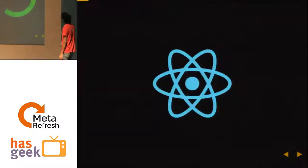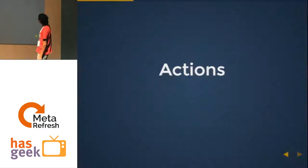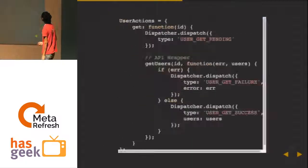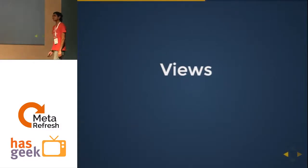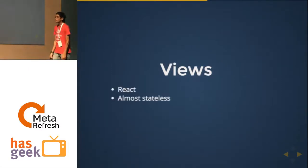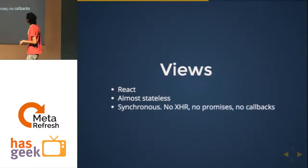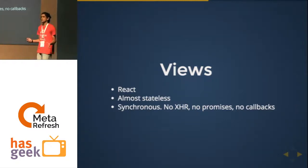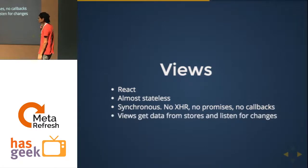Going back to the original picture, Flux talks about four pieces. The last part of the equation is views. We went with React — it might not be the best way, but that's what we did. Views are almost stateless — they take some current state and give out HTML, nothing more. Views are synchronous — no XHR, no callbacks, no promises, nothing. Views get the data from stores and listen for changes.